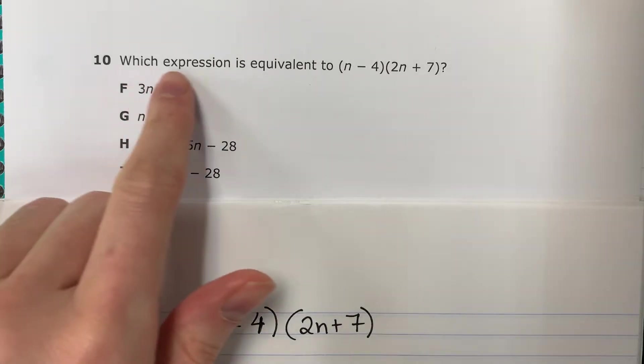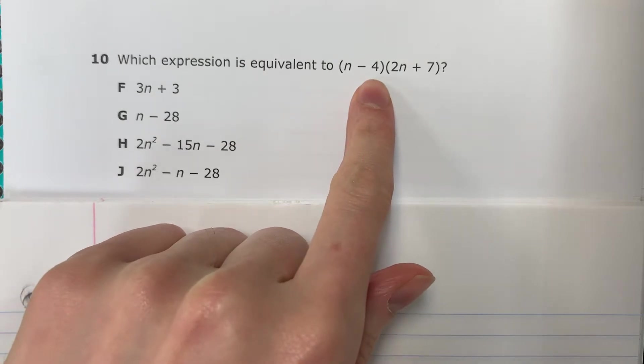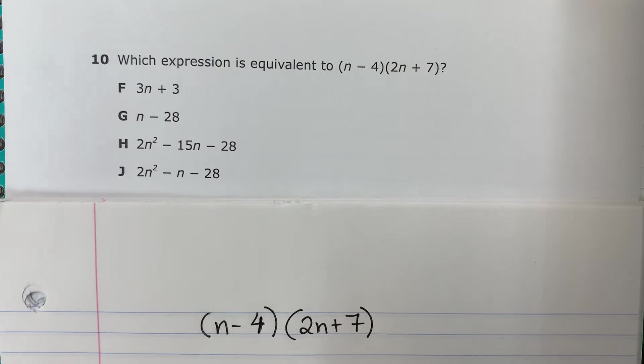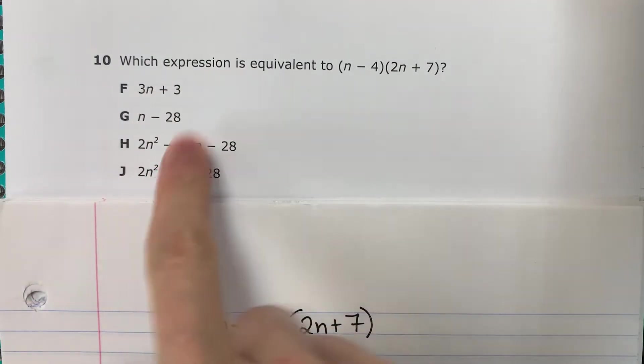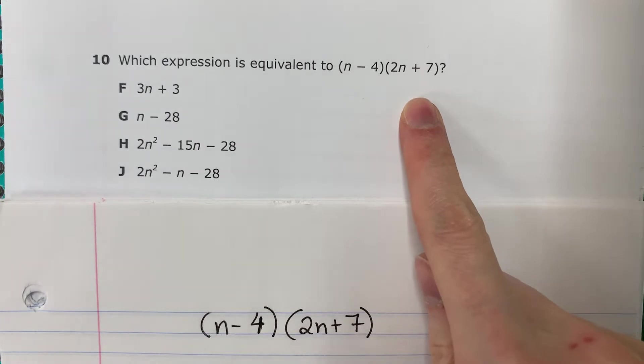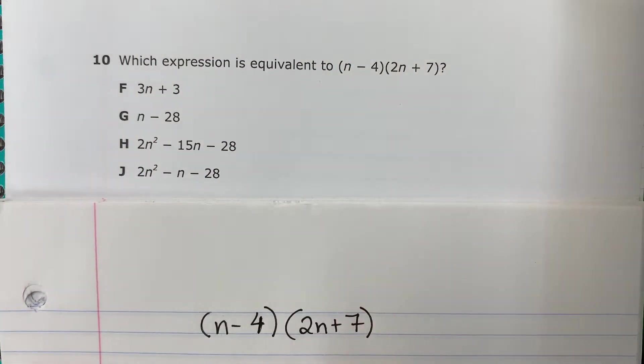Question 10. Which expression is equivalent to the quantity of n minus 4 times the quantity of 2n plus 7? So I need to see which one of these is the same as this, but simplified. Quiero ver cuáles de estos es igual a este, pero más simplificado.